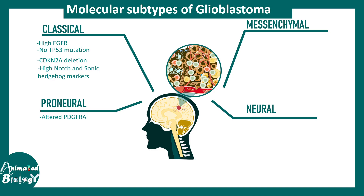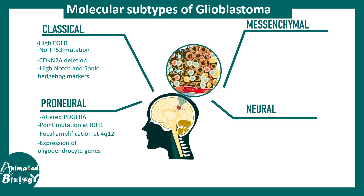In the proneural subtype, altered PDGFR-A is found. Point mutation in IDH1 is also pretty common. Focal amplification of the chromosomal region 4q12 is apparent in proneural glioblastoma. In addition to GFAP, expression of oligodendrocyte genes is also pretty common.